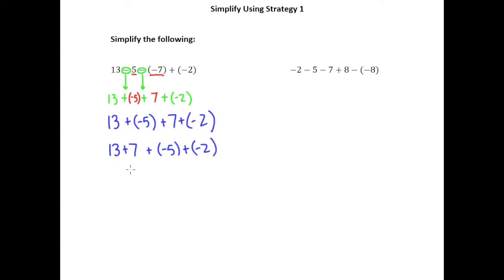And I'm going to add these two, 13 plus 7 is 20. And then these have the same negative sign so add 5 until you get 7. So of course I have negative 7 here.